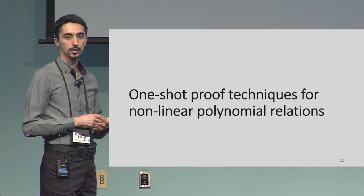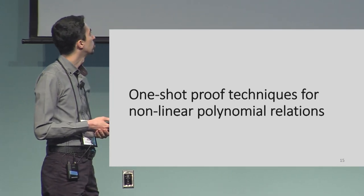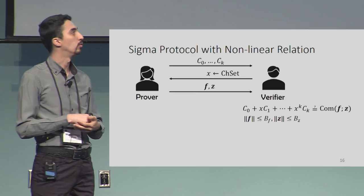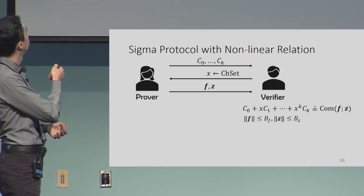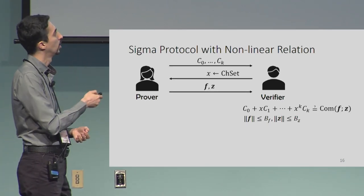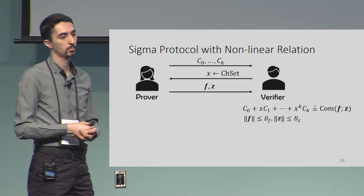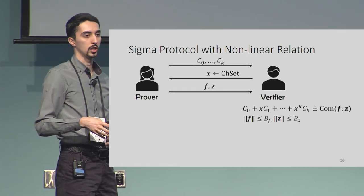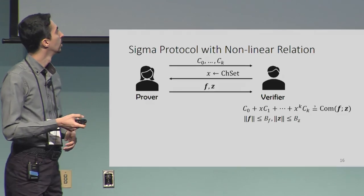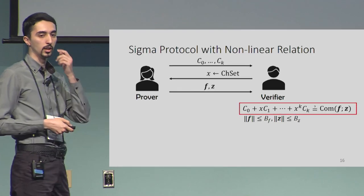Now let's get more technical. We generalize the proof of knowledge: instead of sending two commitments, the prover sends K+1 commitments, and the verifier checks a degree-K relation. That is why we have parameter K — it is the degree of the relation checked by the verifier. Bound checks are still present, but the key part is this degree-K relation.